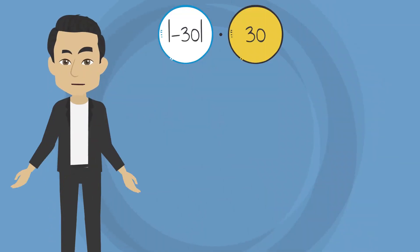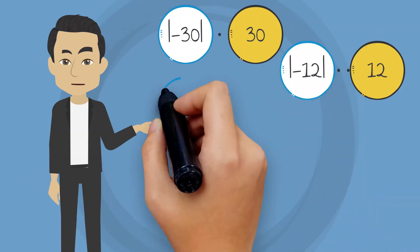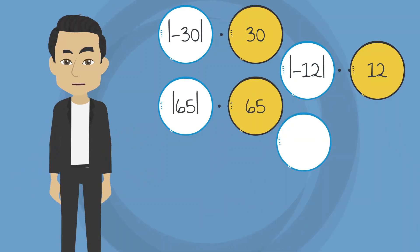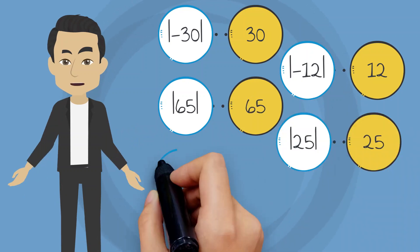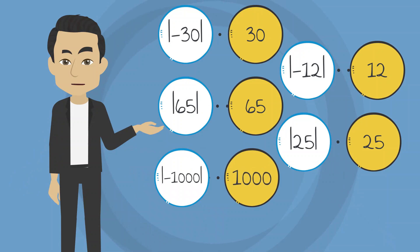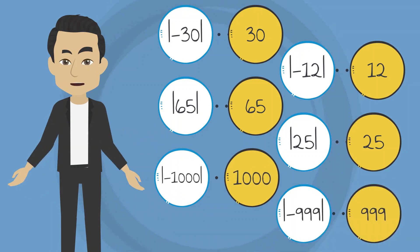The absolute value of negative 30 is 30. Of negative 12 is 12. Of 65 is positive 65. Of 25 is 25. Of negative 1,000 is positive 1,000. Of negative 999 is positive 999.